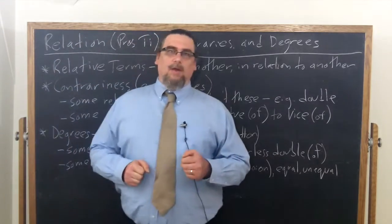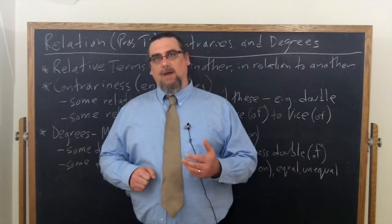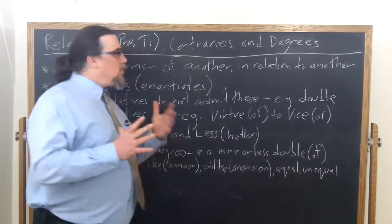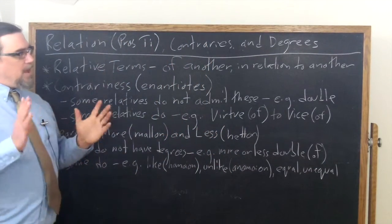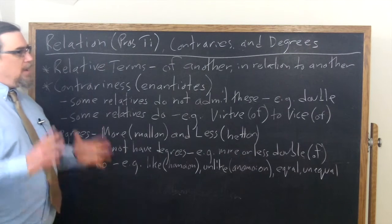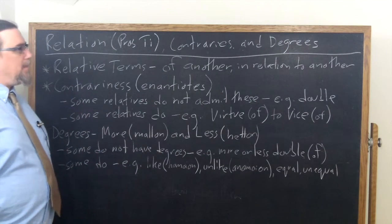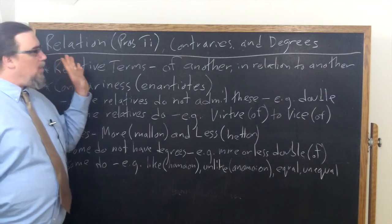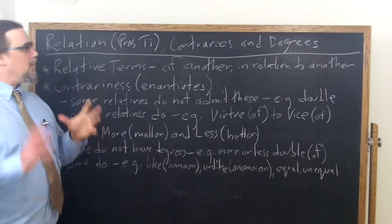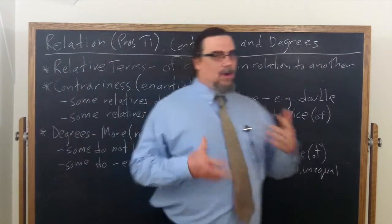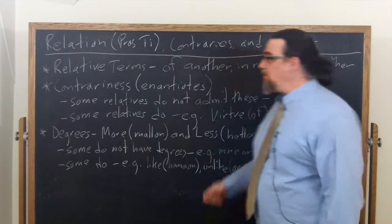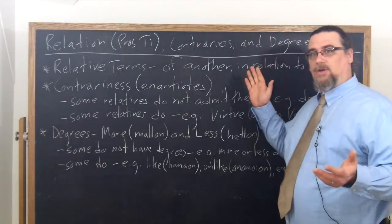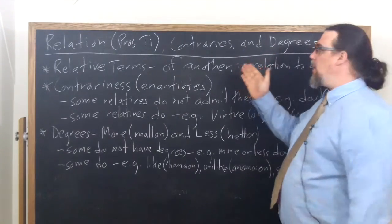When we're considering the category of relation as we find it in chapter 7 of Aristotle's work, The Categories, there's two things that he talks about that we want to look at in a little bit more detail, particularly so that we can run through the examples that he's using. Let's remind ourselves that when we're talking about relative terms, the things that are the pros ti in this category of relation, we're talking about terms that are understood in relation to another, in relation to something else.